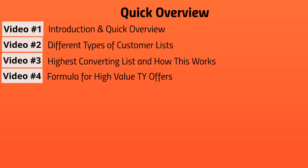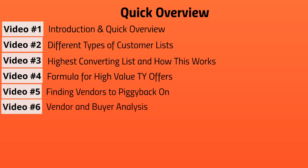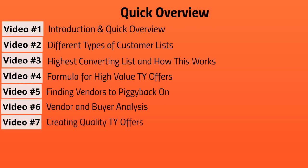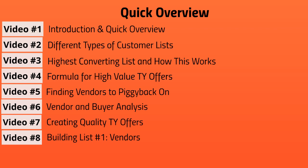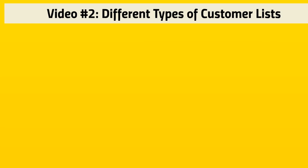Video number four, we're going to talk about the formula for high value thank you offers. Video number five, we're going to talk about finding vendors to piggyback on. Video number six, vendor and buyer analysis. Number seven, creating quality thank you offers. Video number eight, building a list based on everything we've covered. And video number nine, building a list as an affiliate while you're waiting for vendors to say yes. Now that you understand the basics, let's jump right in.